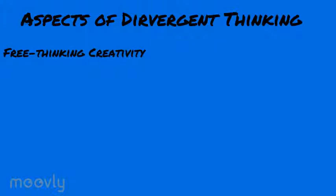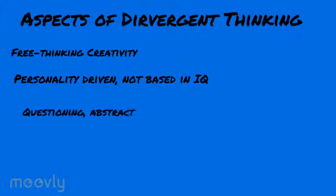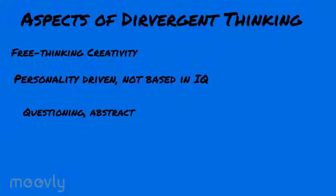What we want to look at, particularly when answering the question of what is divergent thinking, is the aspects of divergent thinking — that's multiple solutions, multiple pathways to arrive at a certain solution. The first aspect of divergent thinking is that it's free thinking, free form, and very creative in its nature.